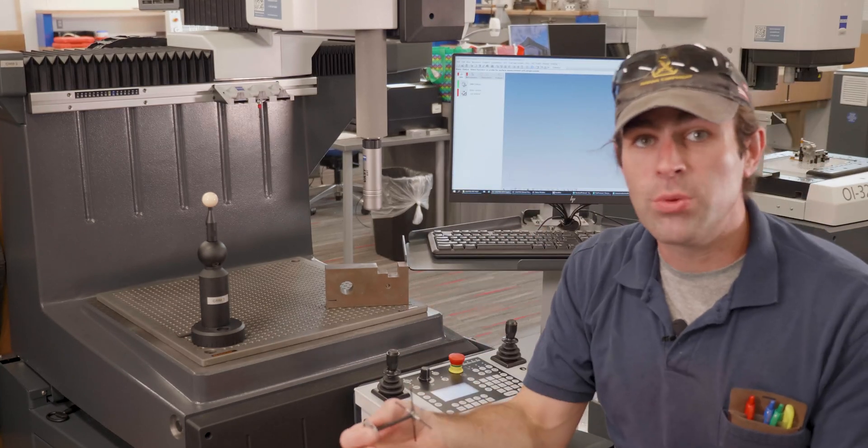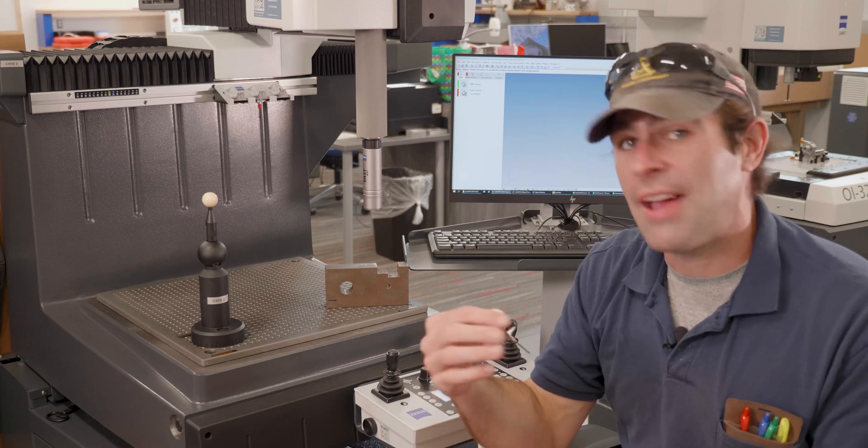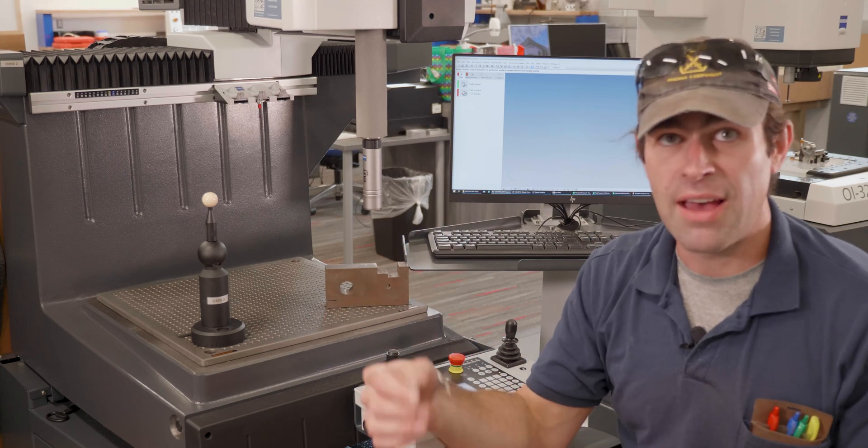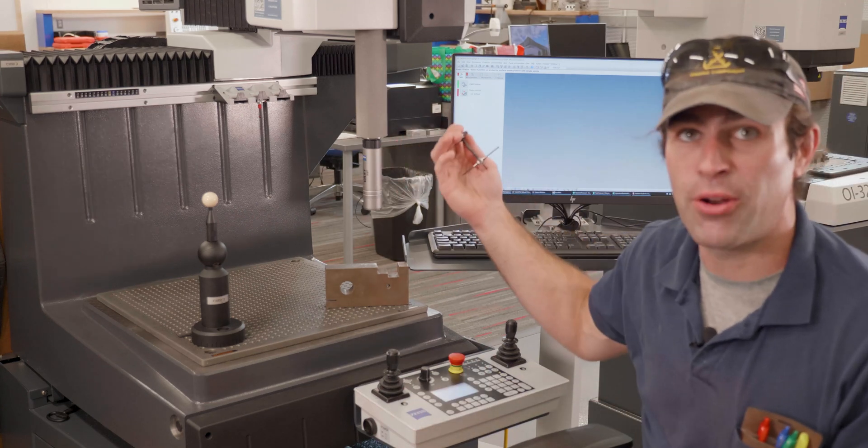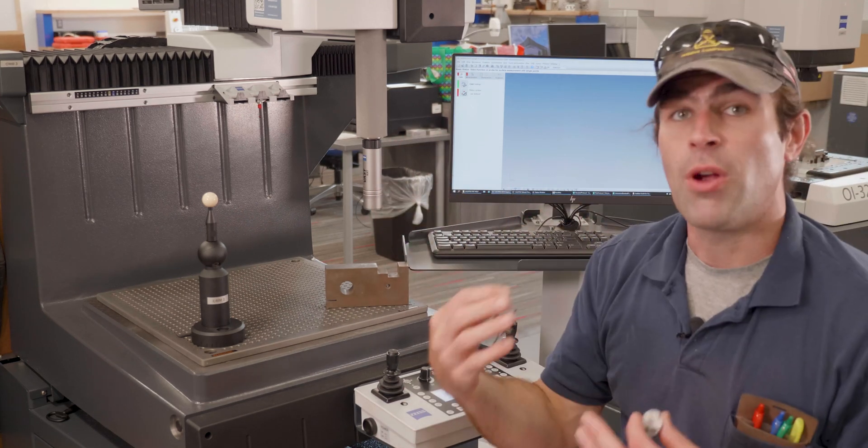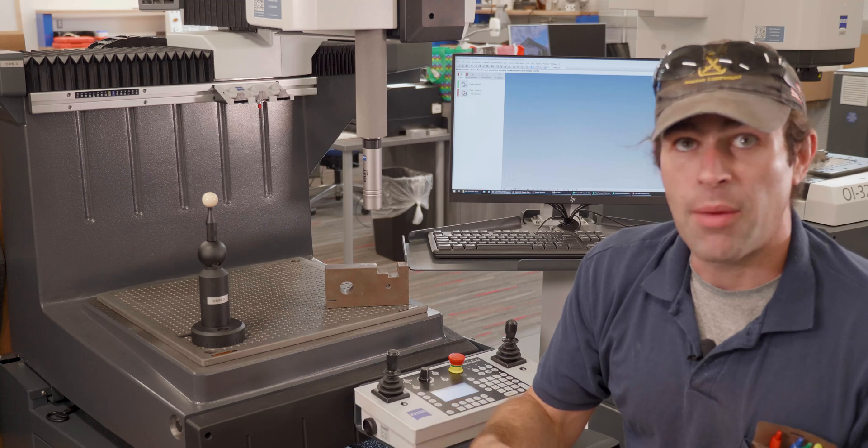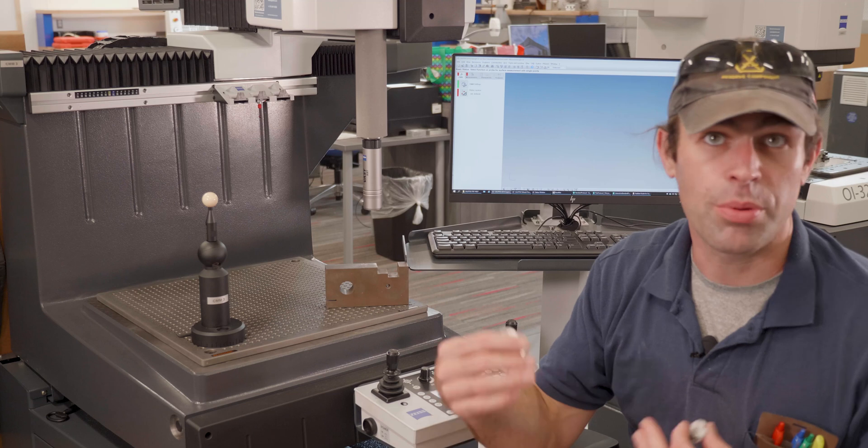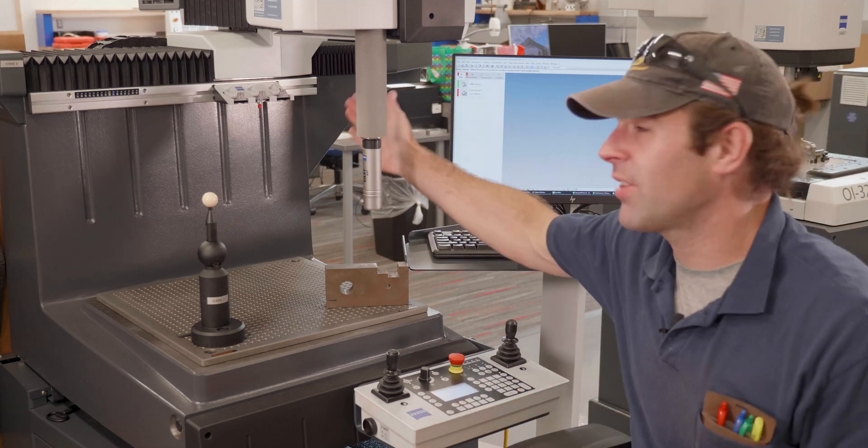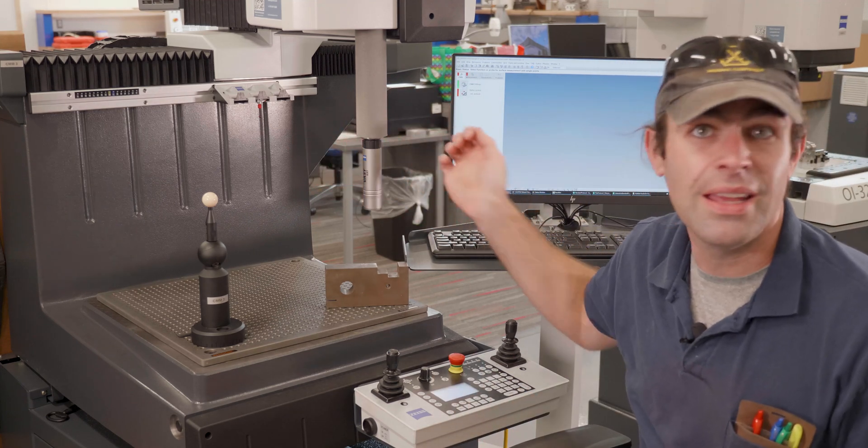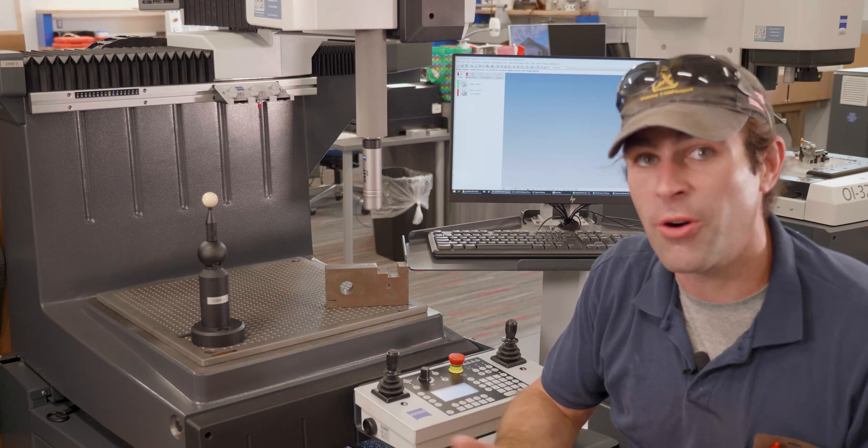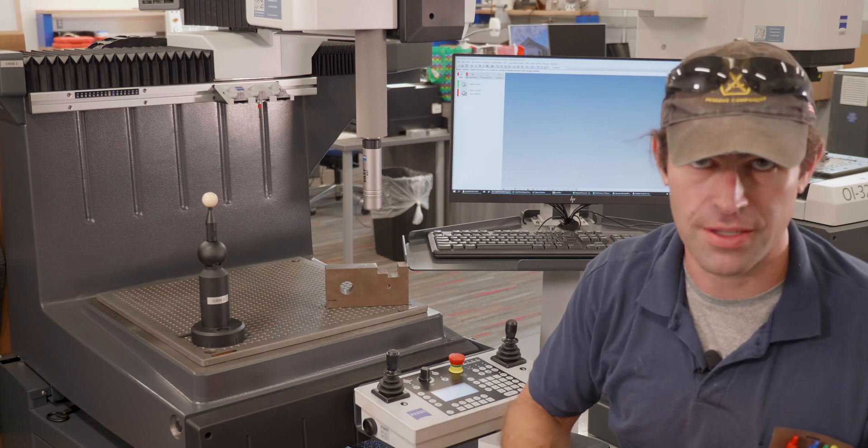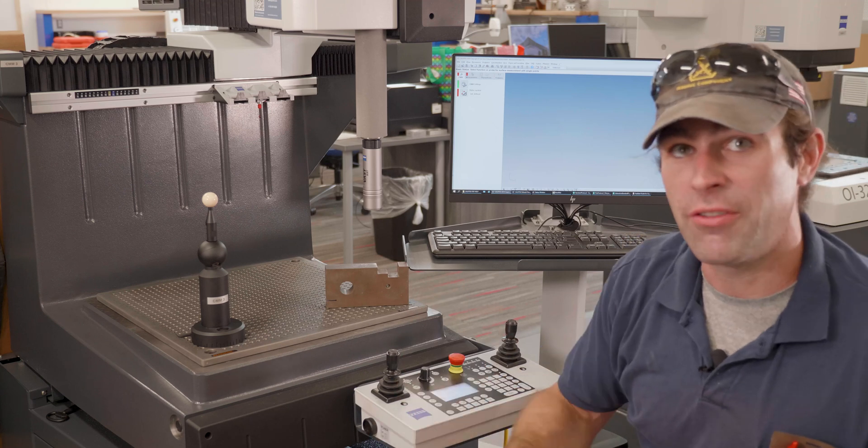Now you only have to do this manually once. After that, the computer remembers all the different styli you have, even if you have to take them out of any holders you might have. You can run a program or write a program that will check all of your stylus systems automatically. You might want to have a program that'll go through each stylus system in your holder every day before you start a shift, just to make sure the machine is properly calibrated. We'll do that in a later video.